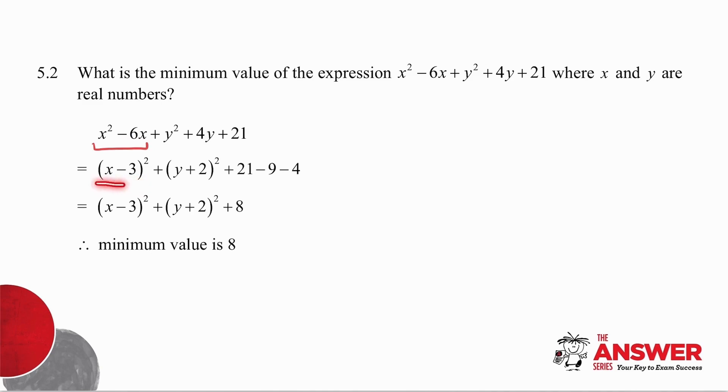If I square this bracket out, I get X squared, I get minus 6X, but then I also get a plus 9. So what do I have to do to compensate for the plus 9? For the plus 9 that I've got extra? I must minus 9. I then do the same thing with the Y's.